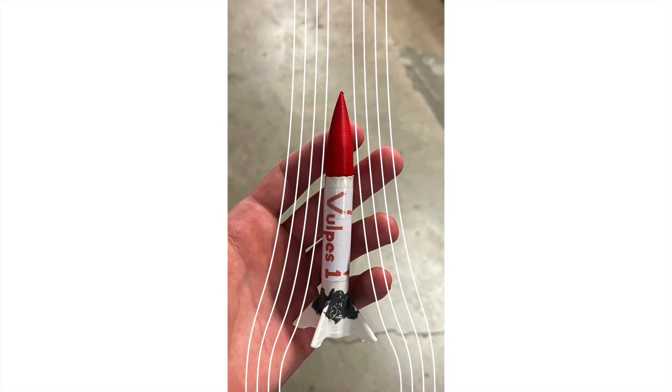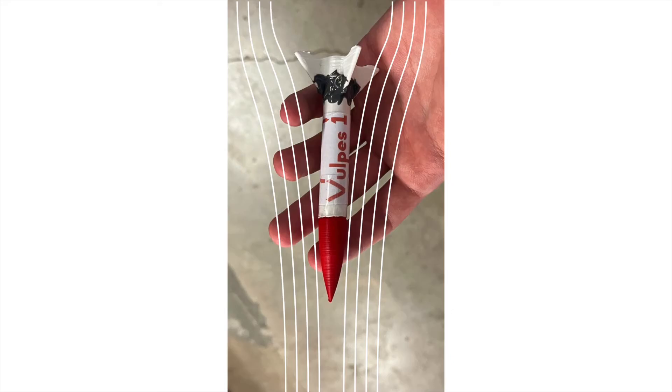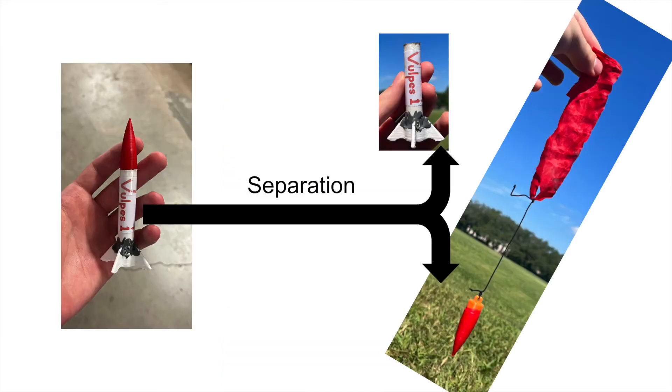All of the design features that made the Vulpice aerodynamic while flying up would also make it aerodynamic while falling down, which would lead to a sharp impact that would bury it in the ground or potentially cause it to hit someone. Thus, separation is designed to slow the descent of the Vulpice by splitting it into two pieces, the nose cone and the body tube.